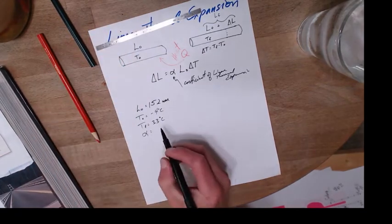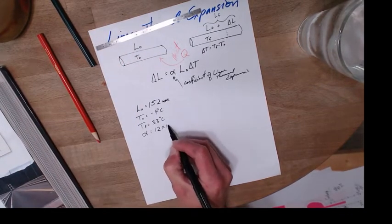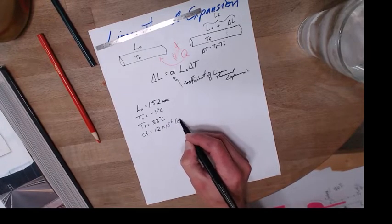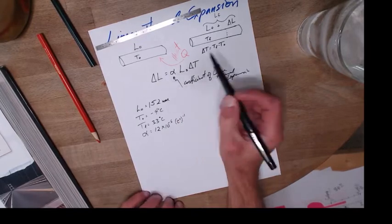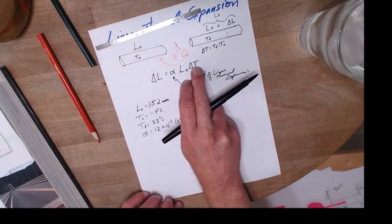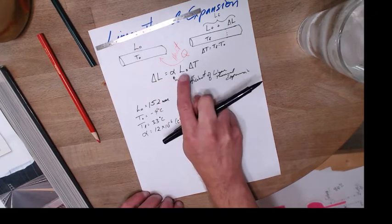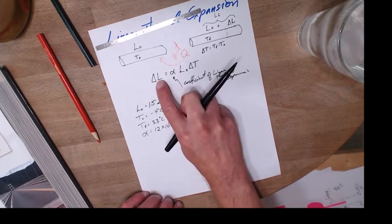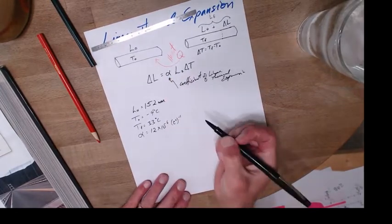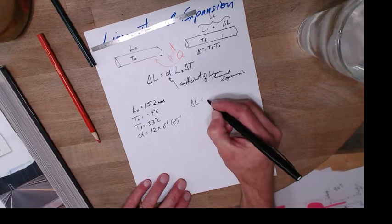So for steel, this is 12 times 10 to the minus six Celsius degrees inverse, just to counteract the Celsius that is here. Because I start with a length, I need to end with a length. I have the Celsius in here, this has the inverse Celsius. So let's find out what my delta L is in the middle of summer.